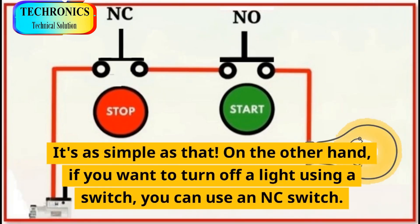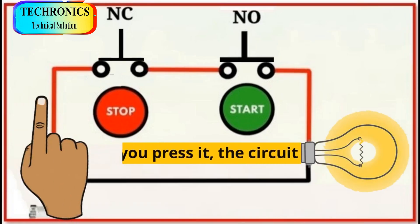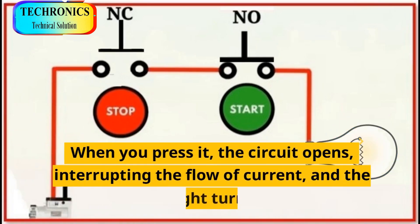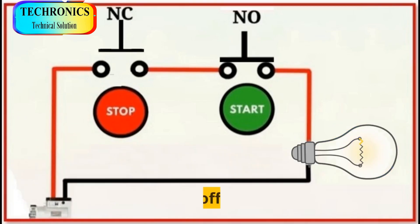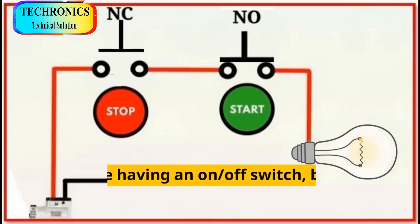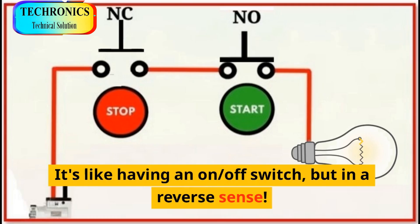On the other hand, if you want to turn off a light using a switch, you can use an NC switch. When you press it, the circuit opens, interrupting the flow of current, and the light turns off. It's like having an on-off switch, but in a reverse sense.